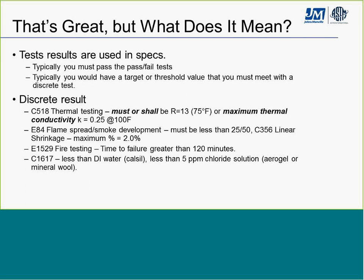Looking at maximum thermal conductivity, remember that small numbers are good and big numbers are generally not as good. But for something like sound absorption, high numbers are better than low. For ASTM E84, if it must be less than 25/50, that's usually spelled out. Planar shrinkage maximum 2%, and so on — there's always going to be some kind of interpretation in a specification. Results establish minimum product requirements, and the goal of a producer is to meet or exceed those requirements every single time.